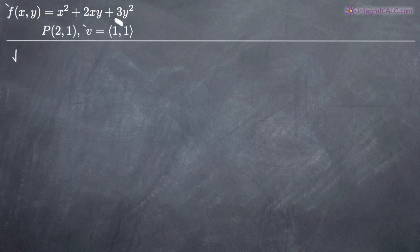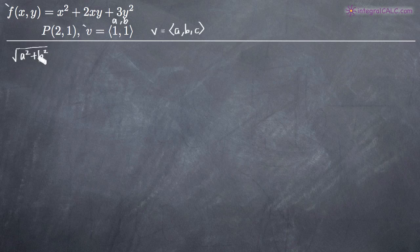First, let's talk about finding the unit vector from vector v. The formula is the same every time: we take the square root of the components inside the vector. So for a vector (a, b), we take the square root of a² + b². And if you have a vector with a, b, and c, you would just add c² under the square root sign. In our case, that's the square root of 1² + 1², because both a and b are equal to 1, which simplifies to the square root of 2.